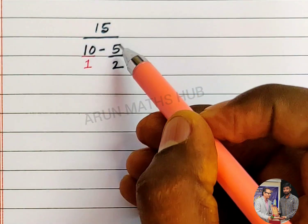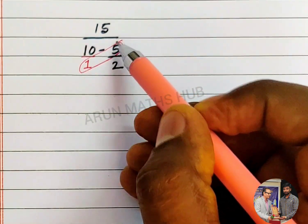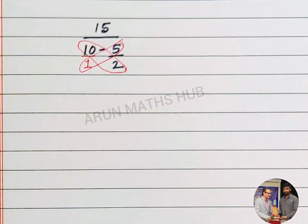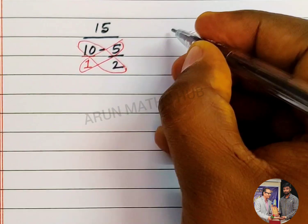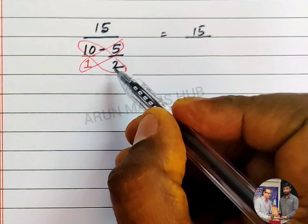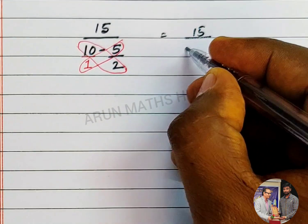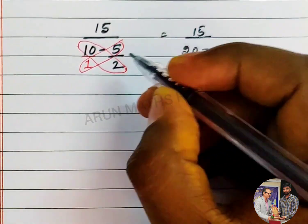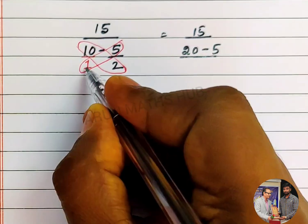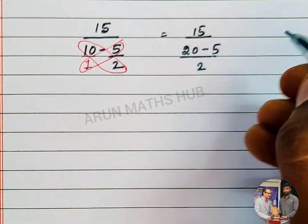Now, use butterfly method. 1 into 5, 10 into 2. Now, 15 divided by 2 into 10 is 20 minus 1, 5 is 5 divided by 1 into 2 is 2.